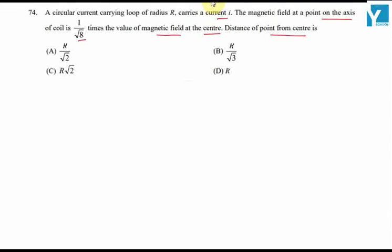Suppose we have a current carrying coil carrying current i and radius is R. Now it is given that the value of magnetic field at center BC is equal to mu not i by 2R.